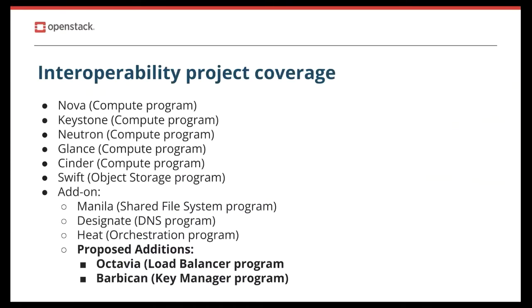If you are wondering what projects are part of which programs, here is the list. Nova, Keystone, Neutron, Glance, and Cinder belong to the Compute program. Swift service belongs to the ObjectStorage one. For the add-ons, Manila service is part of the shared file system, Designate service is the DNS program, and Heat belongs to the Orchestration program. In the current cycle, we would like to add two new add-on programs: Octavia service as the load balancer program and Barbican service as the key manager program. This effort is still in progress.